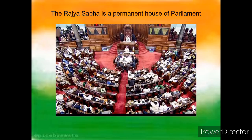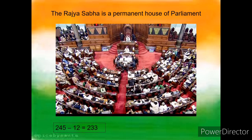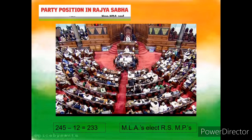The Rajya Sabha is a permanent house of parliament because it cannot be dissolved. Currently, there are 245 members in the Rajya Sabha including the 12 nominated ones, making 233 elected members. These elected members are chosen by elected members of state legislative assemblies.